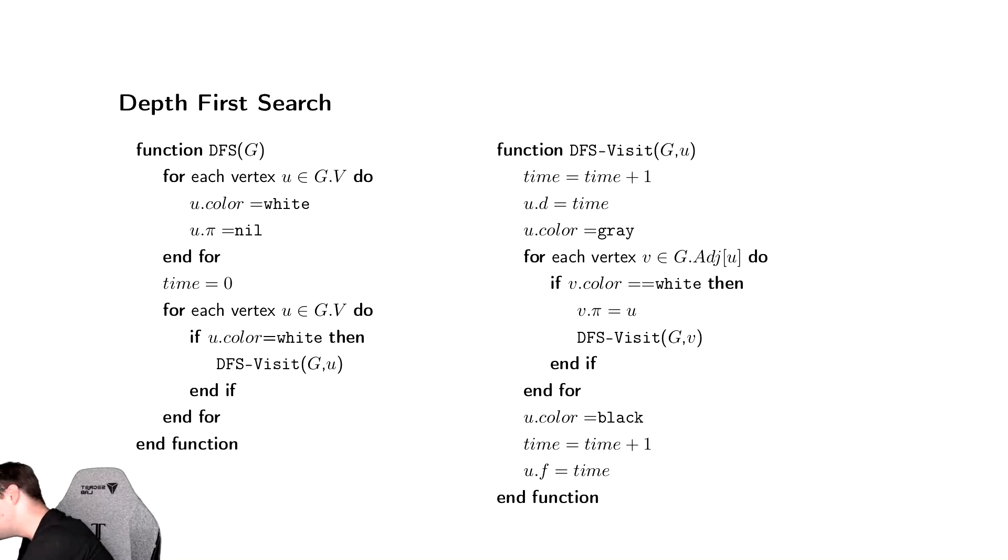So when we visit a vertex, that's what we were doing inside of the while loop in the other example. When we visit that vertex, we say we just discovered it and color it gray. And then for every adjacent vertex, we say if we have yet to discover that vertex, we visit it. So we discover u, and then we check the adjacency list, and if there is anything adjacent, we visit it.